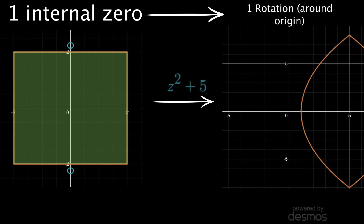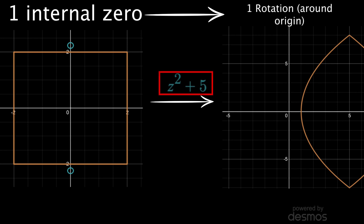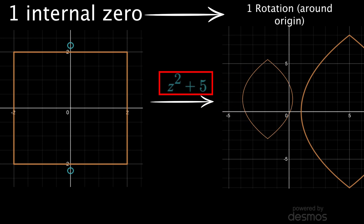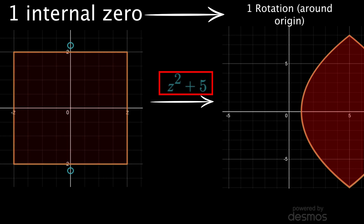You'll notice that once there are no zeros inside the left contour, then the output no longer goes around the origin. If you know how to square a complex number and add 5, the only thing we've really discussed is that if you plug in a bunch of points along a closed path into that function, out comes another set of points on a closed path that will not contain the origin inside it, if the input contour did not contain any of the zeros.